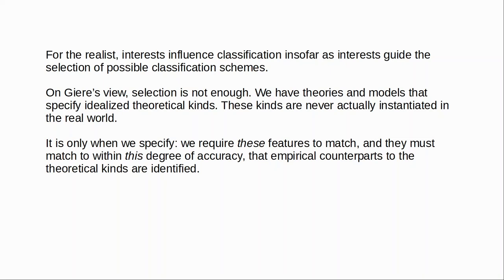Giere presents his view in terms of classical mechanics, and the specific claims about how classical mechanics works may not hold for all theories. But the general point — that what we get in science are idealised models that are similar to the world — is going to be true for classification in general, at least on Giere's view. His discussion in Scientific Perspectivism is pretty brief, literally only a couple of pages on what he calls theoretical kinds. What I want to do in this video is examine in a bit more detail how theoretical kinds are coordinated with the things we find in the world.